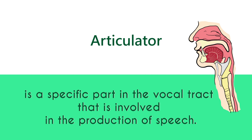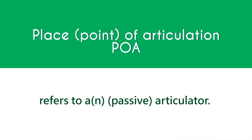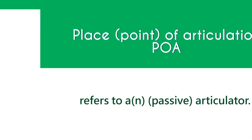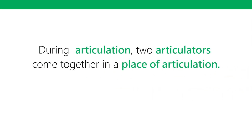An articulator is a specific part in the vocal tract or vocal apparatus that is involved in the production of speech. When we speak of place of articulation or point of articulation (POA), we are referring to an articulator. You might ask: what is the difference between place of articulation and an articulator?